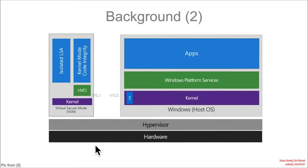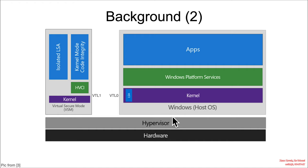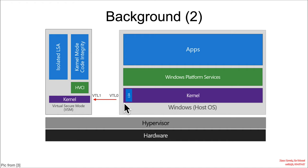For all intents and purposes, when a normal user is using the system, they don't notice any difference — they just see the typical kernel. But behind the scenes, there can be this other isolated secure kernel. The particular vulnerability we're going to be looking at has to do with data passed from the VTL0 kernel over to the VTL1 kernel.